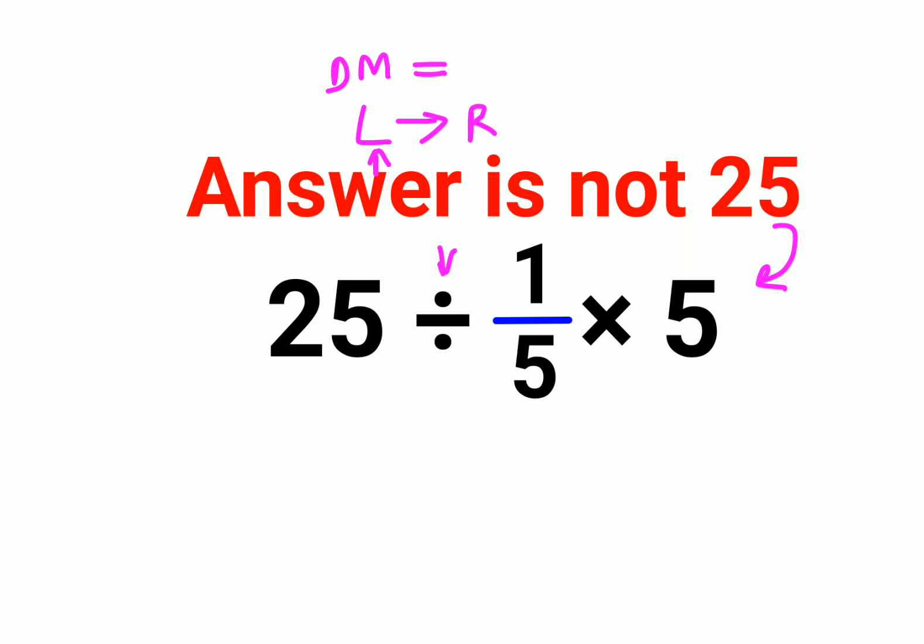So the first operation is 25 divided by 1/5. So when you have division, you will follow the rule of KCF, where K stands for keeping the first number as it is, C stands for changing the division sign to multiplication, and F stands for flipping, taking the reciprocal of 1/5, which is 5/1.